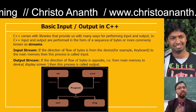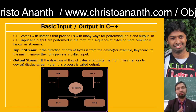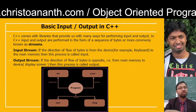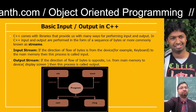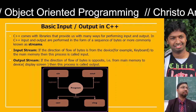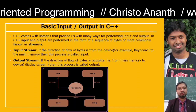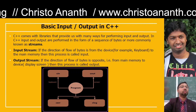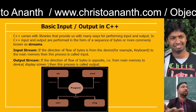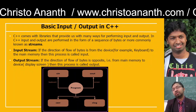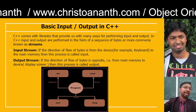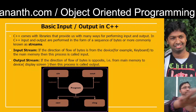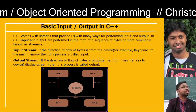Input stream means if the direction of the flow of bytes is from the device — maybe like the keyboard — to the main memory, then this process is called input. Output means if the direction of flow of bytes is opposite, from the main memory to the display screen. If the output stream is all about the direction of flow of bytes from main memory to the display screen, something is displayed, then it is called output.